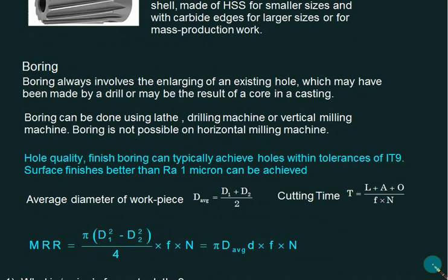Boring always involves the enlarging of an existing hole. Calculation for boring is almost the same as drilling, except we calculate d_average as (d1 + d2)/2. The formula for machining time is the same as drilling. However, for MRR, use the same formula as turning because d_average will give the wrong answer when there is a large difference between d1 and d2.